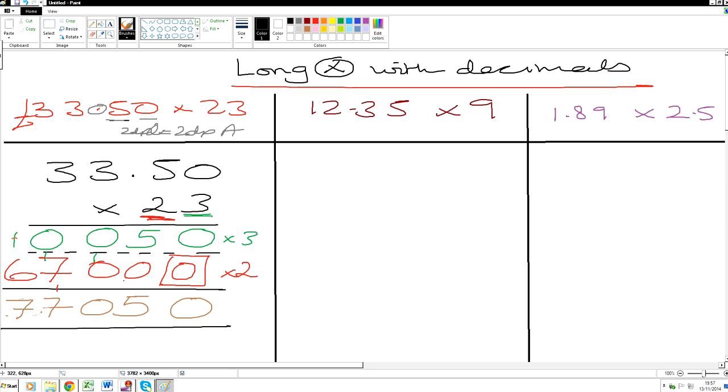Now we need to put this decimal point back in. So we have 2 decimal places in the question. So we're going to have 2 decimal places in the answer. And there it goes. That's the end of the first question. I'm going to put the pound sign here for completeness. Next question.